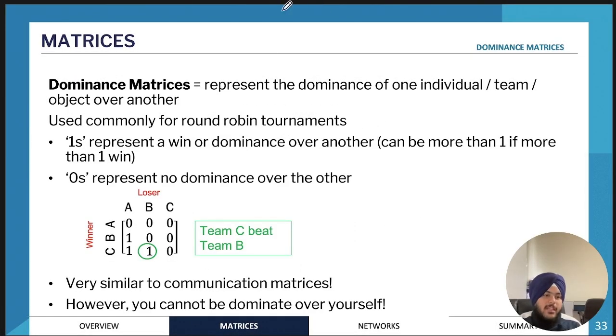Now we'll move on to dominance matrices. Dominance matrices are used for competitions or round-robin tournaments. They indicate when teams are competing, representing which team is winning and which is losing, showing the winner and the loser.